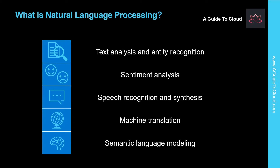So what is Natural Language Processing? NLP or Natural Language Processing is the area of AI that deals with creating software that understands written and spoken language. NLP enables you to create software that can analyze text documents to extract key phrases and recognize entities such as places, dates, and people. NLP can enable you to perform sentiment analysis to determine how positive or negative the language used in a document is.